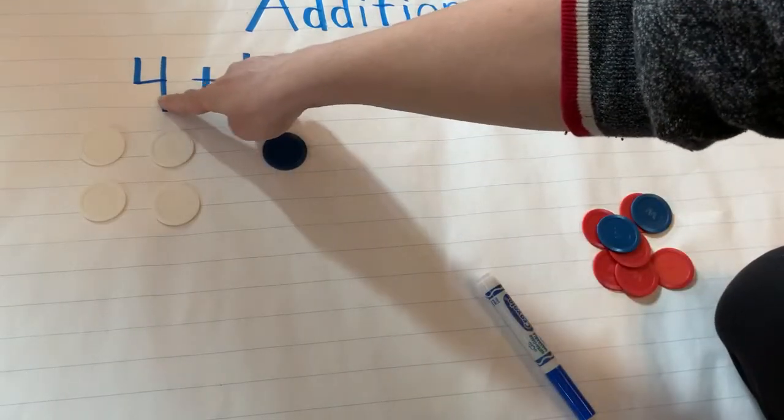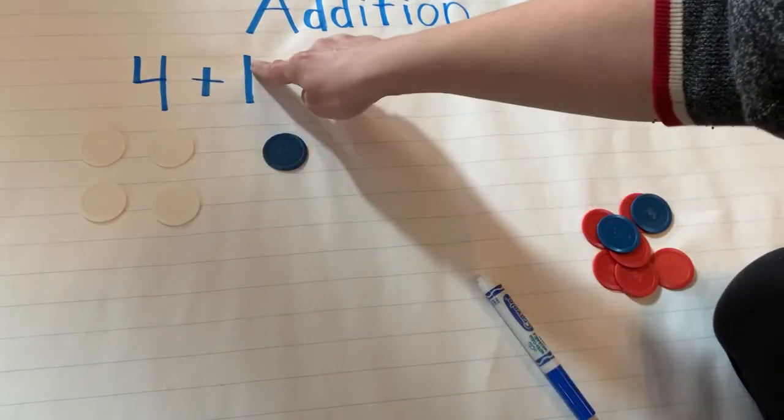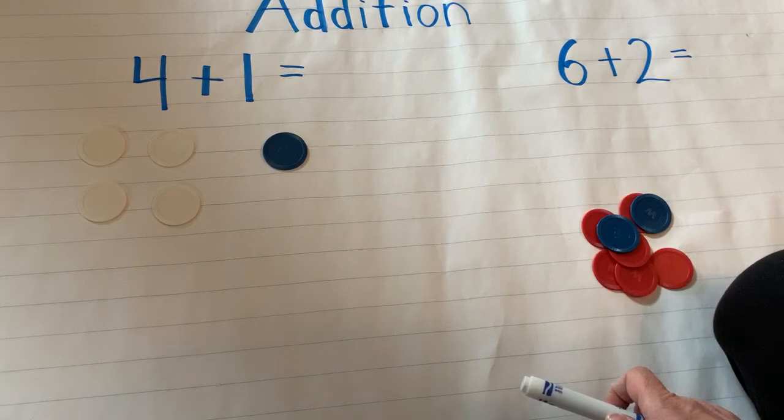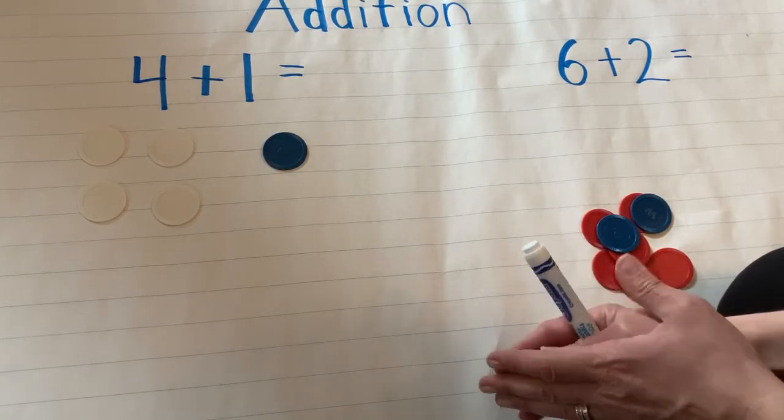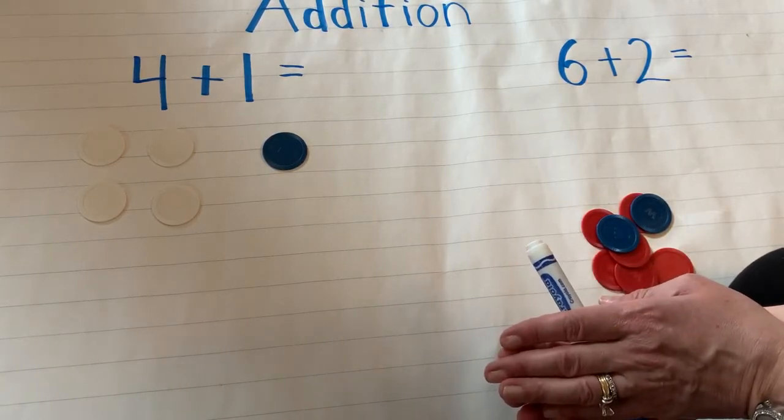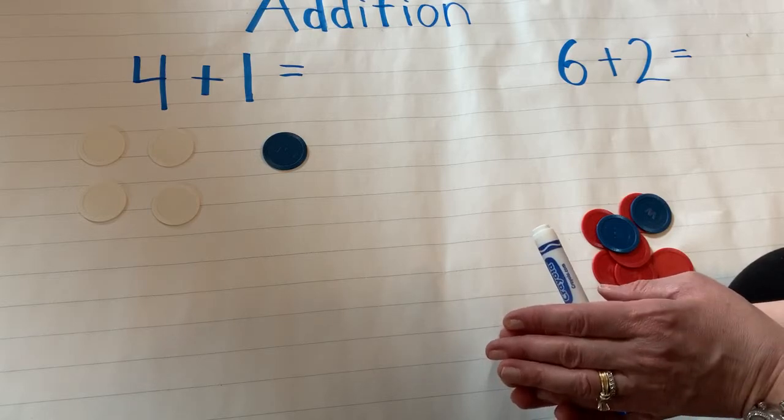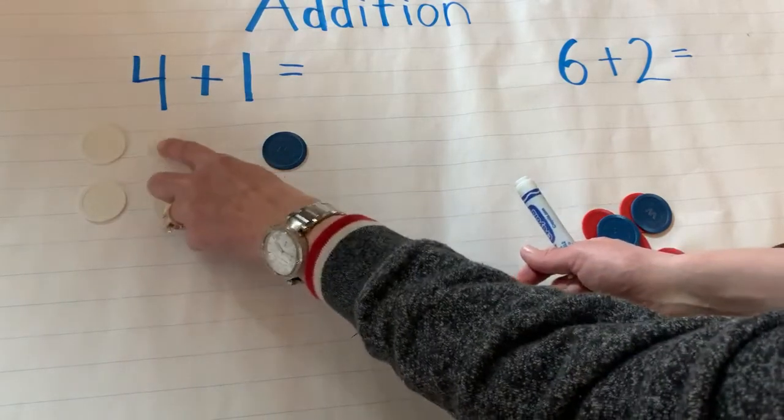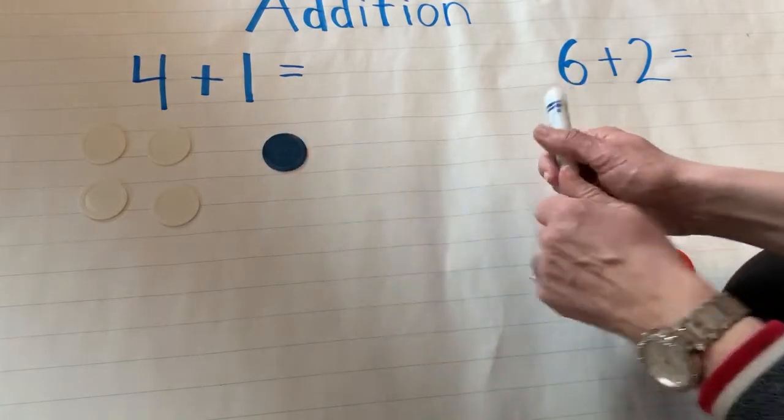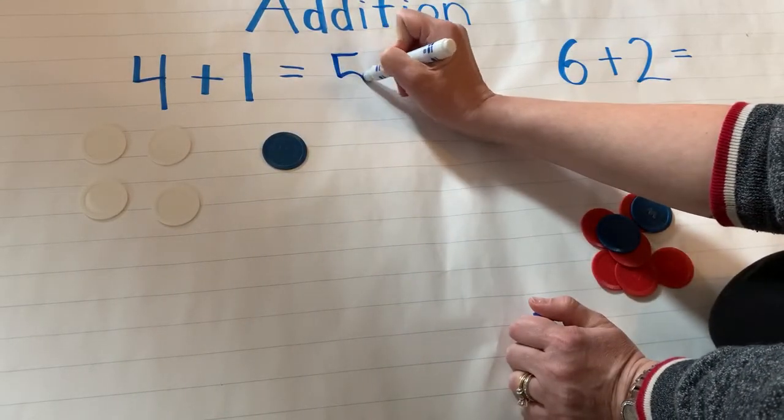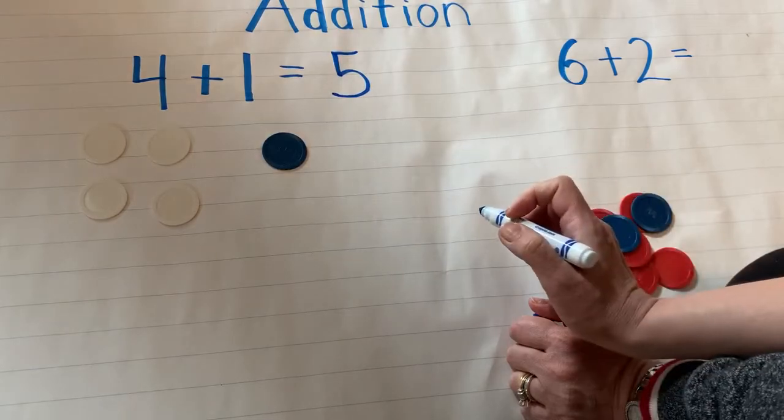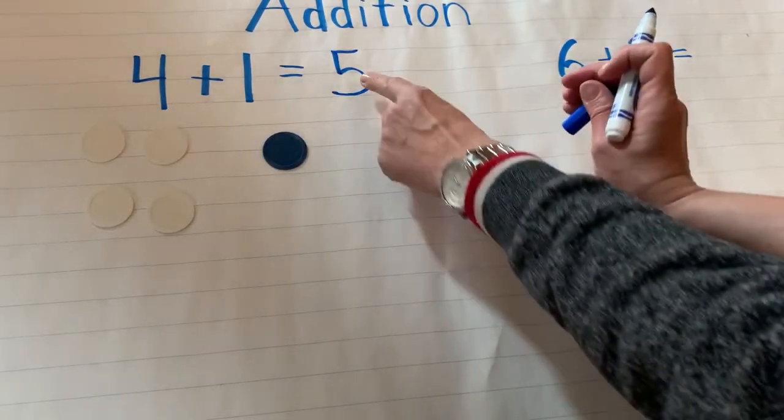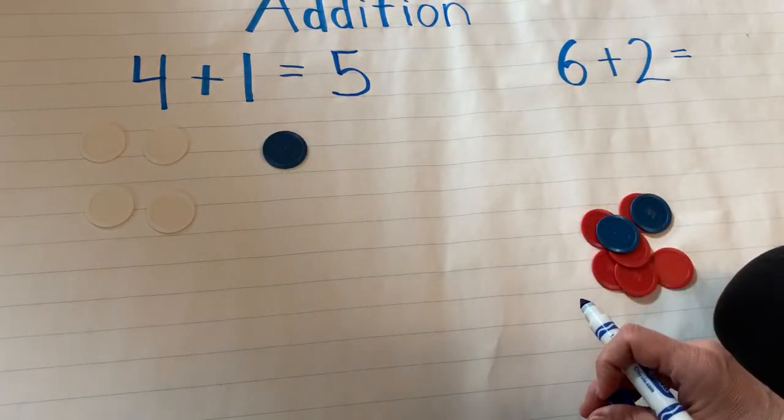So here I've shown the first number shows four. The second number shows one. So this would be called my sum, the total amount together. When I put things together, it's called addition and we get a sum or a total. And we say all together. So all together I have one, two, three, four, five. So my sum, my total will be five. So this represents this. Or another way of saying represents is shows.